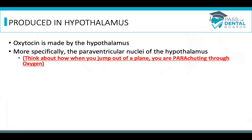Oxytocin is made by the hypothalamus, but sometimes they'll ask a more specific question about where it's made. Inside the hypothalamus is a group of cells called the paraventricular nuclei, and these are the cells that will make oxytocin. To remember this, think about how when you jump out of a plane, you're parachuting through oxygen.